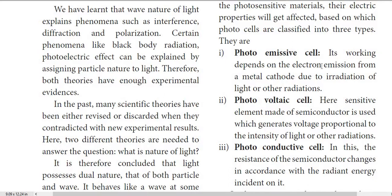The photoemissive cell's working depends on the electron emission from a metal cathode due to irradiation of light or other radiation. When irradiation rays are incident on the cathode, electrons eject from the metal surface. Based on this process, the device is called a photoemissive cell.